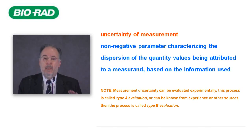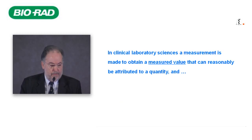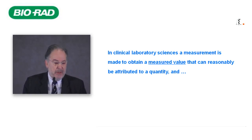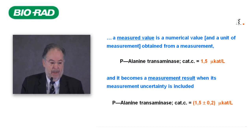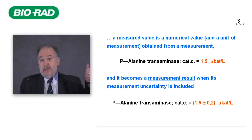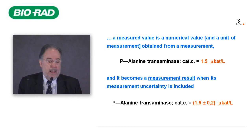In other cases, we try to find this value from the bibliography and experience — this is the so-called Type B evaluation. In clinical laboratory science, a measurement is made to obtain a measured value that can reasonably be attributed to a quantity. A measured value is a numerical value and a unit of measurement obtained from a measurement.